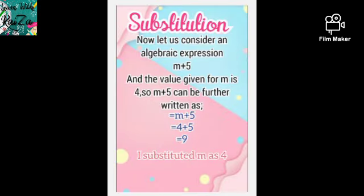Now let's look at substitution. Consider the algebraic expression M plus 5. I am giving the value of M as 4. If M is 4, you can write 4 in place of M. So M plus 5 becomes 4 plus 5, which equals 9. Here I substituted M with 4 — this is known as substitution.